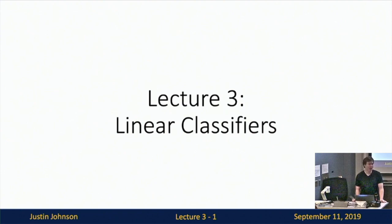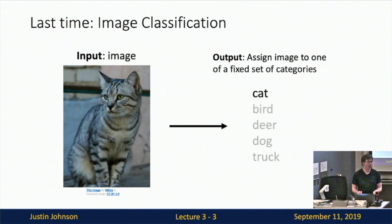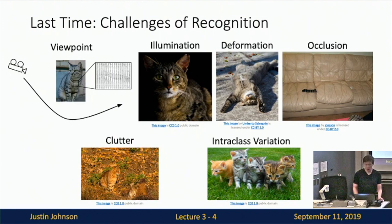Welcome back to lecture three. Today we're going to talk about linear classifiers. As a quick recap, in the last lecture we talked about the image classification problem — a foundational problem in computer vision where we had to take an input image and our network had to predict a category label from a fixed set of categories.